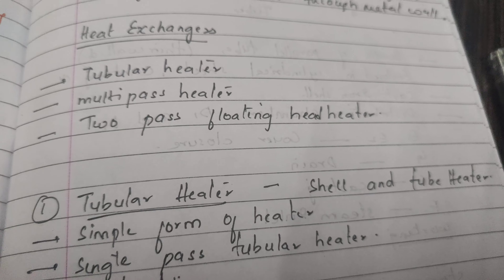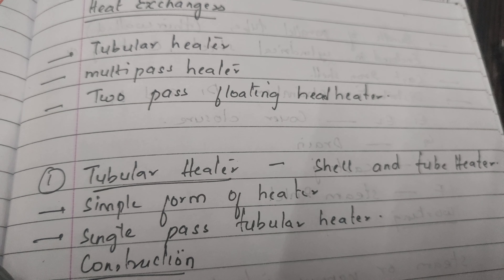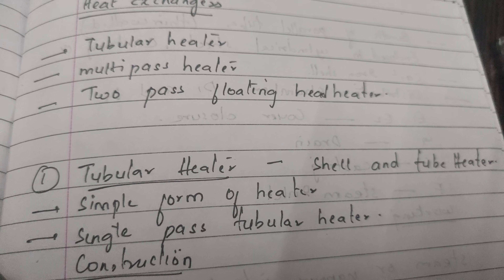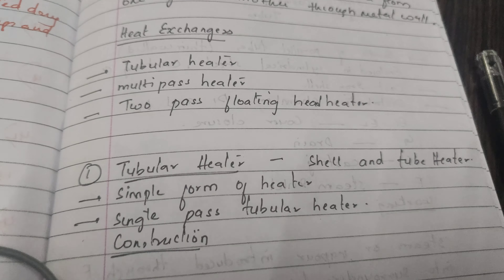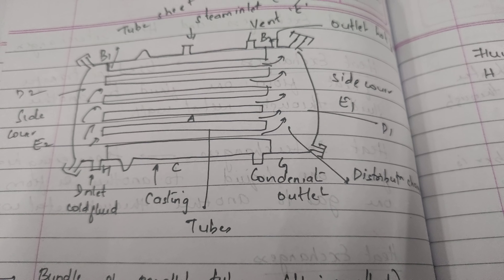First is the tubular heater, also called a single shell tube heater. It is a simple form of heater, also known as a single pass tubular heater. Now we will look at its construction. The tubular heater will look like this — understand the diagram properly, because all heaters will have similar diagrams with only slight differences, so don't get confused.